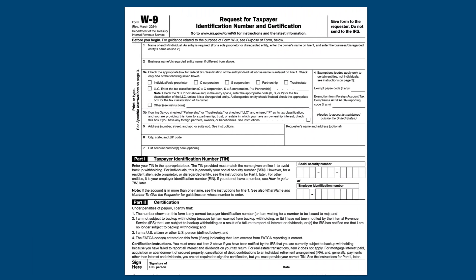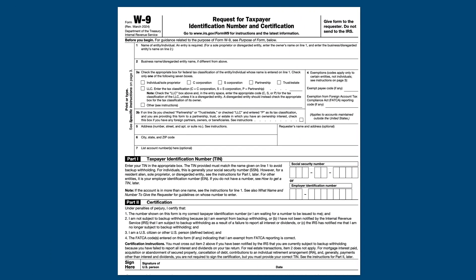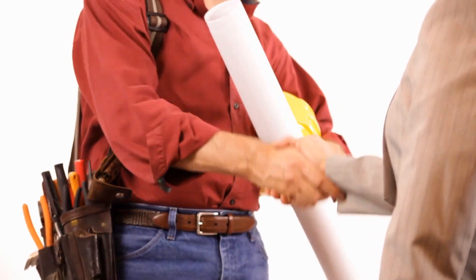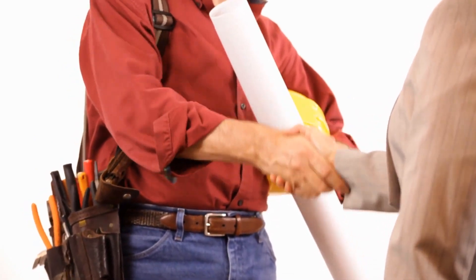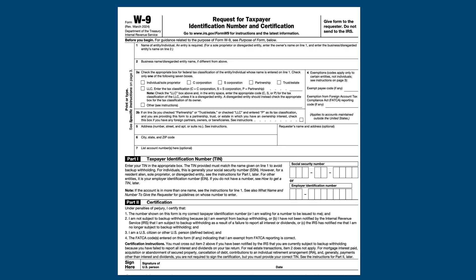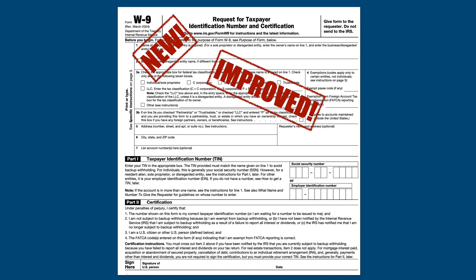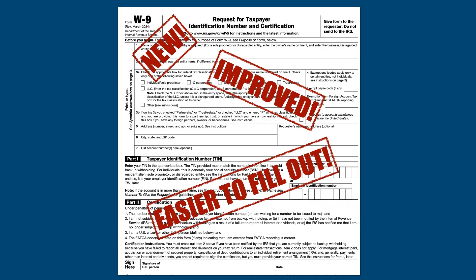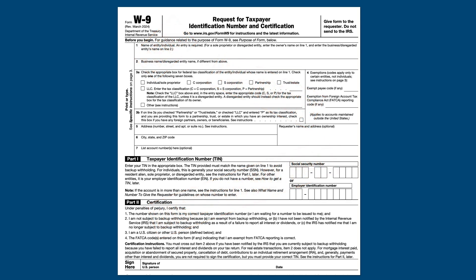In March of 2024, the IRS released a new version of Form W-9, which you may recognize if you've ever opened a bank or financial account, or worked for someone as an independent contractor. And despite the IRS claiming that the form is clearer and easier to fill out, there is still a chance for confusion when filling out this form. I'm the Tax Geek, and here is Form W-9, Oversimplified.